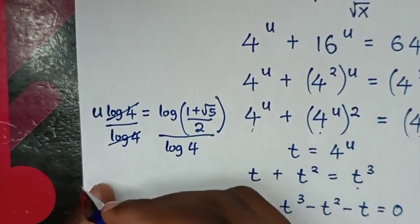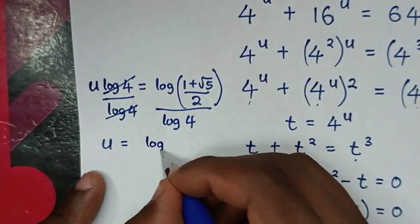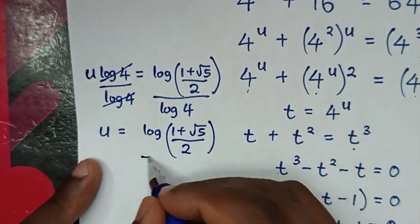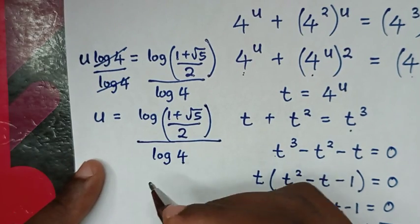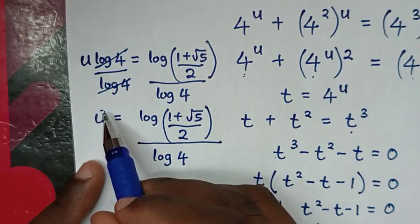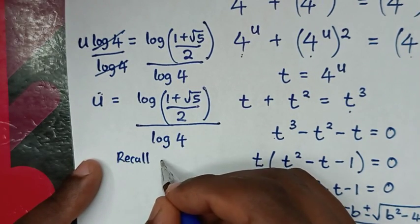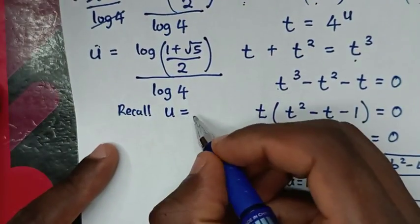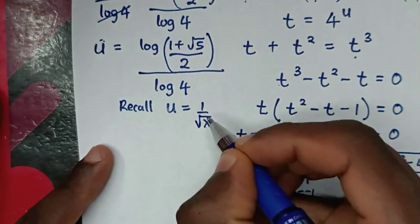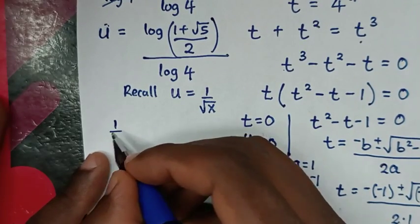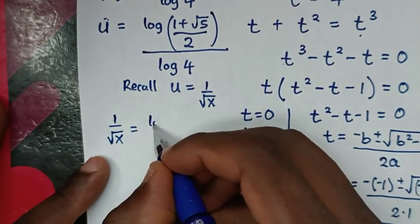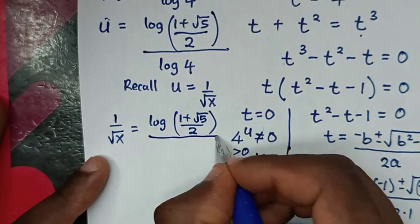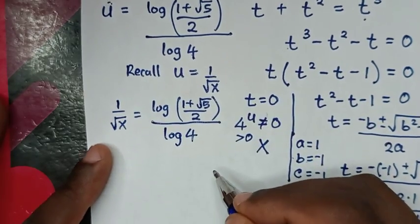After dividing, u equals log of (1 plus square root of 5 over 2), over log of 4. But we need the value of x. Recalling that u equals 1 over square root of x, we substitute: 1 over square root of x equals log of (1 plus square root of 5 over 2) over log of 4.